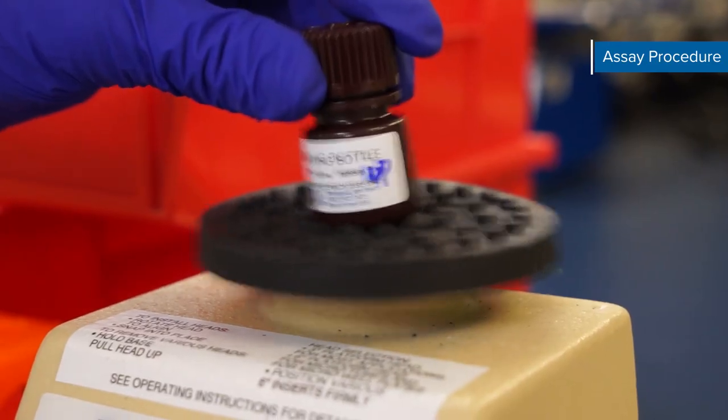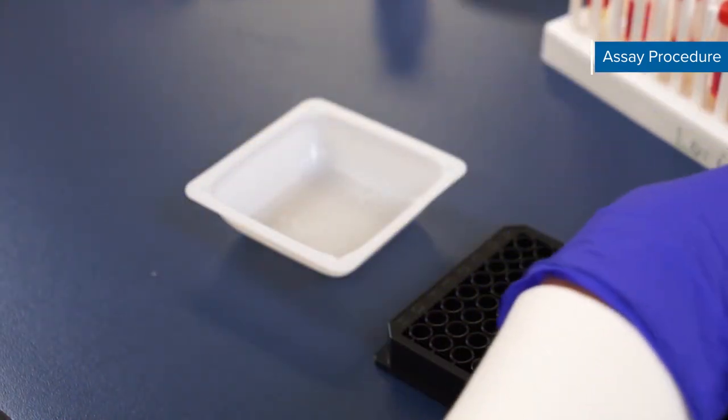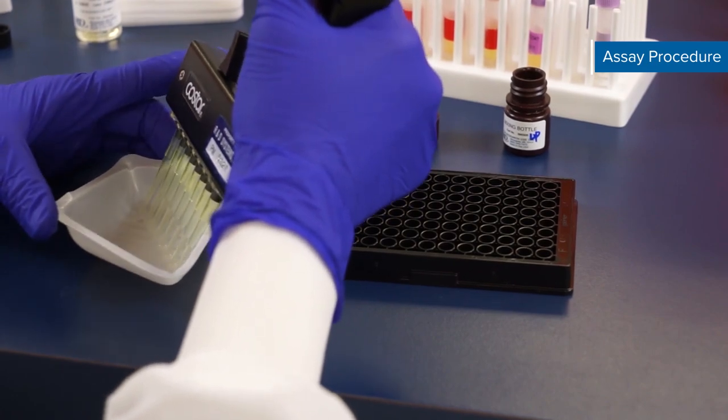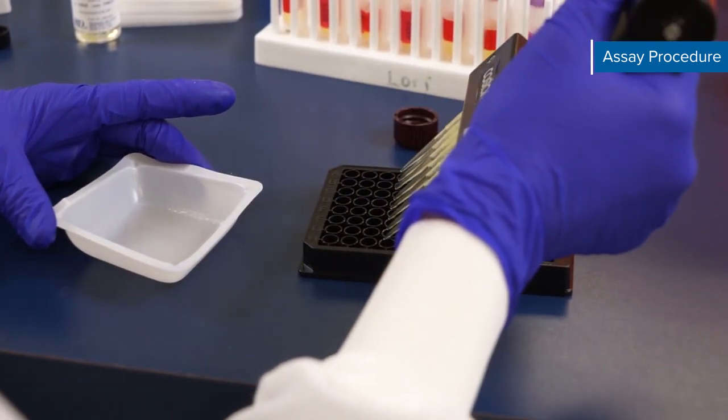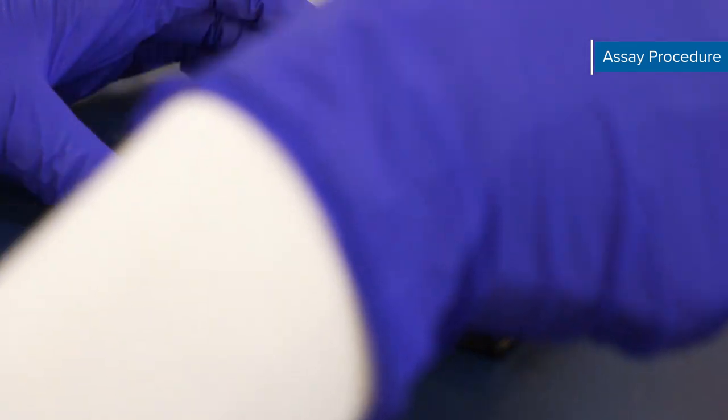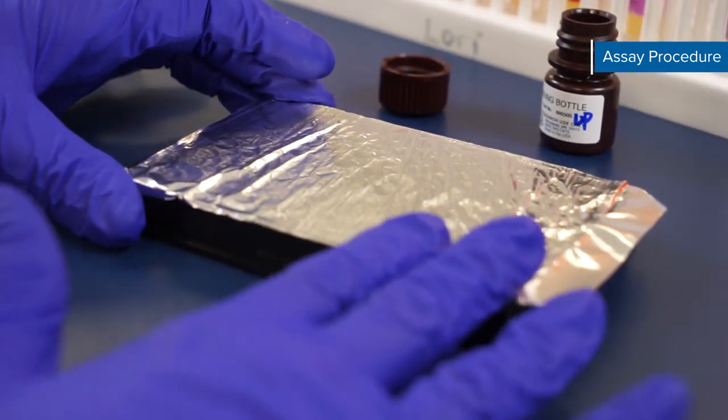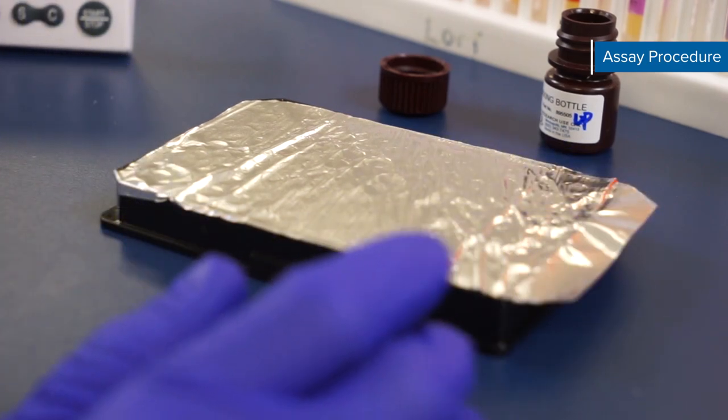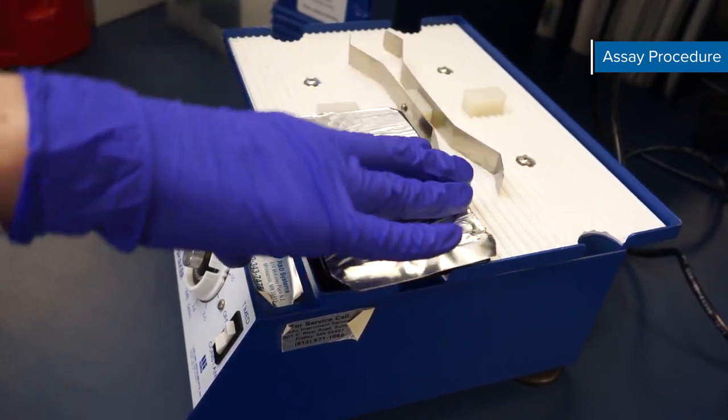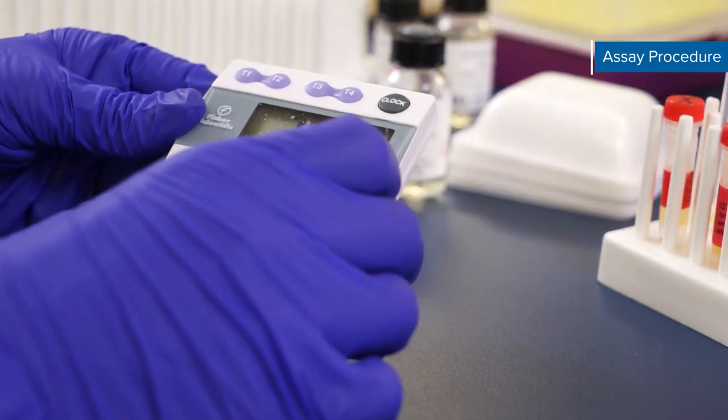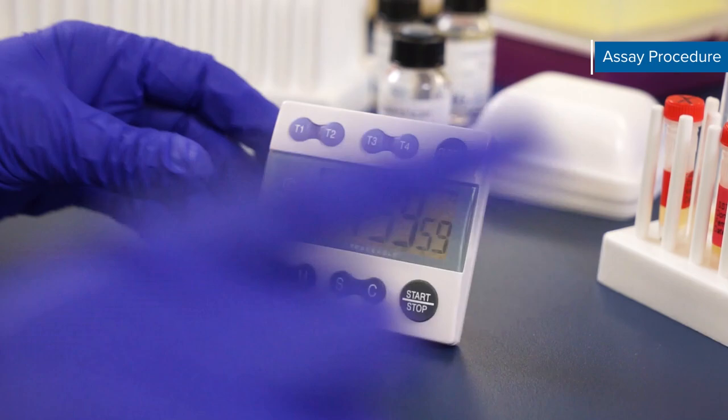Next resuspend the diluted microparticle cocktail by vortexing. Add 50 microliters of diluted microparticle cocktail to each well of the microplate containing standard, sample, or blank and securely cover with a foil plate sealer. If you're running a partial plate you can cut the plate sealer to cover the wells containing liquid and save the other section for your next assay. Now incubate for two hours at room temperature on a shaker at a 0.12 inch orbit set at 800 plus or minus 50 rpm.